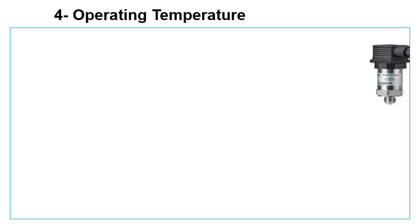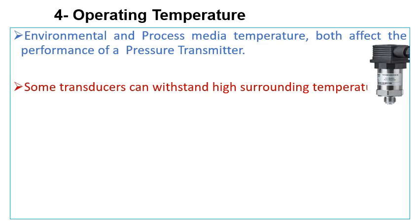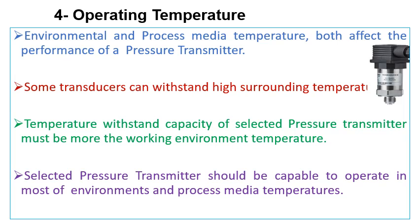Operating temperature is also an important consideration when selecting a pressure transmitter. Both the environmental temperature and process media temperature can affect its performance. Some transducers can withstand high surrounding temperatures without compromising performance, but this is not true for all transducers. Make sure the temperature withstand capacity of the selected pressure transmitter exceeds the working environment temperature.